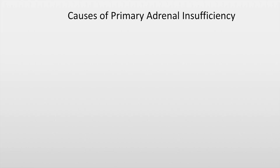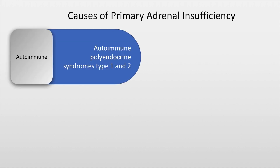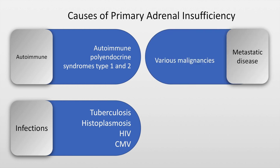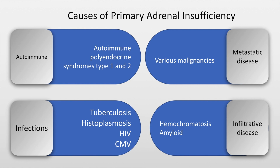Primary adrenal insufficiency is a defect of the adrenal gland itself and this must be remembered. The causes include autoimmune disease, part of the autoimmune polyglandular syndromes or polyendocrine syndromes type 1 and 2, infections such as tuberculosis, histoplasmosis, human immunodeficiency virus or cytomegalovirus, various malignancies, and infiltrative disorders such as hemochromatosis and amyloidosis.